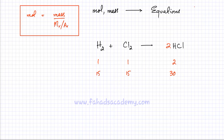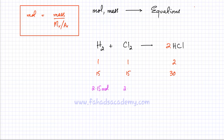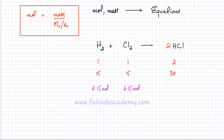If I have 2.15 moles of hydrogen, the ratio is one-to-one, so I need exactly 2.15 moles of chlorine. And since one chlorine molecule produces two molecules of HCl, 2.15 moles of Cl₂ would produce twice that amount — 4.30 moles of HCl. The balanced equation represents the ratio in which moles react, not mass or volume, but moles.